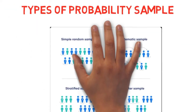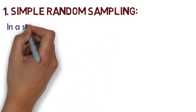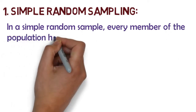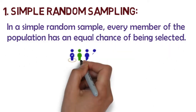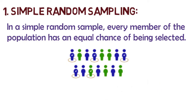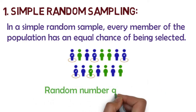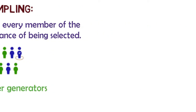There are four main types of probability sample. Number one, we have simple random sampling. In a simple random sample, every member of the population has an equal chance of being selected. Your sampling frame should include the whole population. To conduct this type of sampling, you can use tools like random number generators or other techniques that are based entirely on chance.